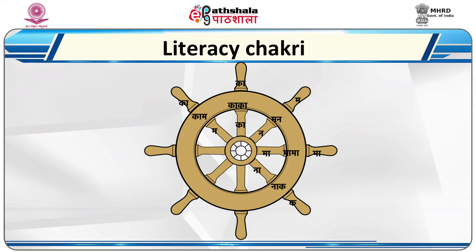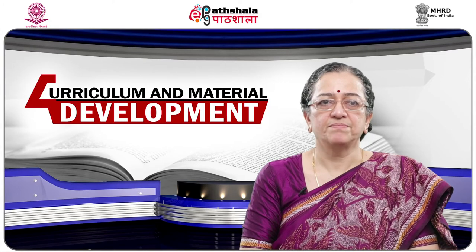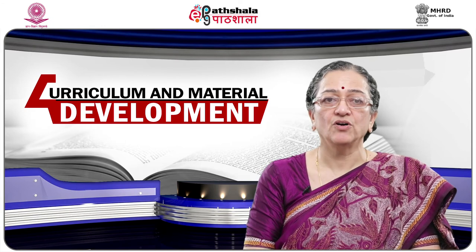Literacy circles, or chakris as they are called in Hindi, are used for many purposes like identification of letters, making 2 or 3 letter words, use of matras, etc. They are made up of cardboard or chart paper. Napier multiplication strips are used to understand the concept of multiplication and create interest in multiplication tables. With these strips, learners can create tables of any denomination by themselves using the logic behind it. Each of Napier's strips is simply the multiplication table of that number. The digits in the units place and the tens place are written separately, so one need not make the effort of recalling multiplication tables.